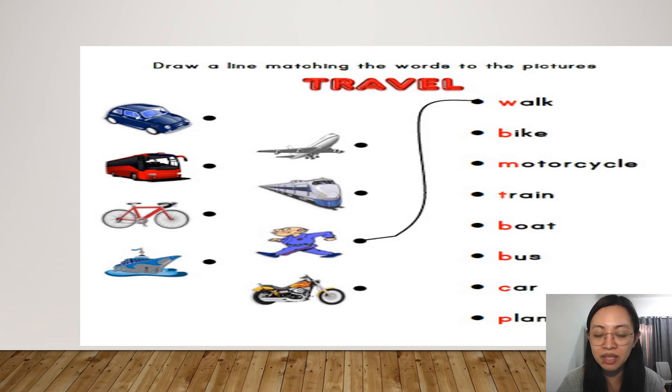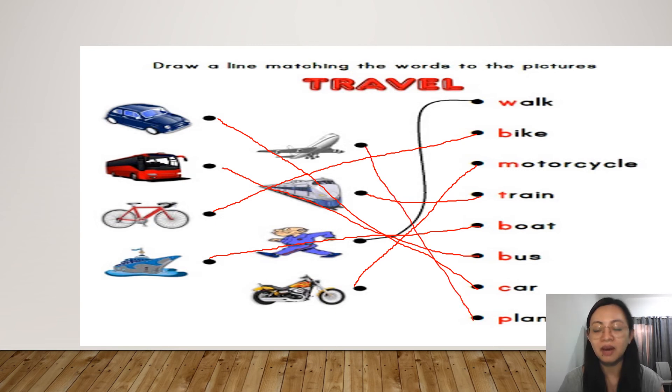This word is, what word is this? Bike. Where's the picture for bike? Very good. Motorcycle. Train. Boat. Bus. Car. Plane. Did you get all the answers correctly? Very good.